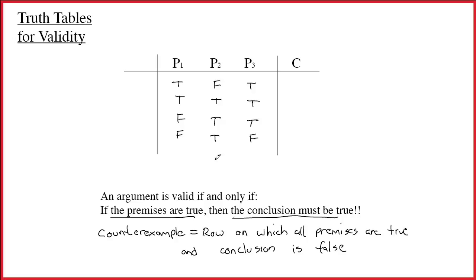Sometimes you don't have enough information to give an answer. If on some row all premises are true but the conclusion value is unknown, there's not enough information to determine validity. That's the basic principle: if you find a counterexample, it's invalid; if you don't, it's valid.